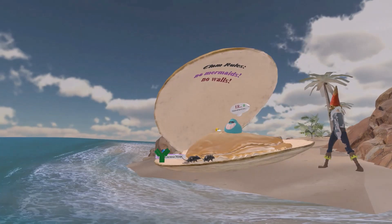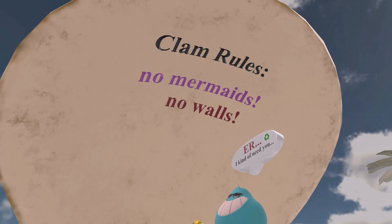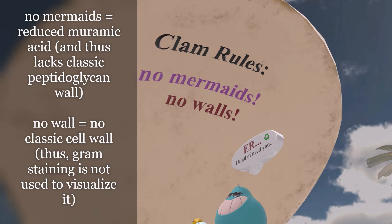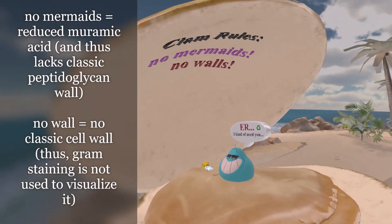Now let's take a look at the top of the clam over here. We see that this guy wrote some clam rules. The first is that there are no mermaids — mermaids are not allowed on this clam. This reminds us that Chlamydia has a reduced amount of muramic acid, and it is for this reason that it lacks the classic peptidoglycan wall. The clam has no walls, reminding us that Chlamydia does not have a classic cell wall.